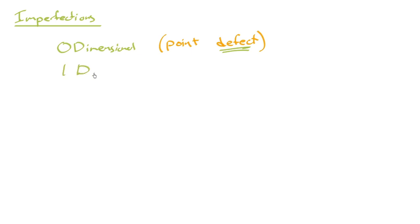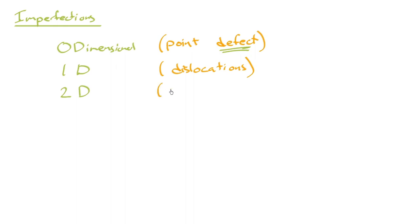What about a one-dimensional imperfection? Well, these are the ones we saw in the previous video — these are called dislocations. When you first look at dislocations it might be a little difficult to see why they are in fact one-dimensional, but we'll look at those in more detail. Two-dimensional imperfections are really interfaces — they could be internal interfaces, which are called grain boundaries or crystal boundaries.